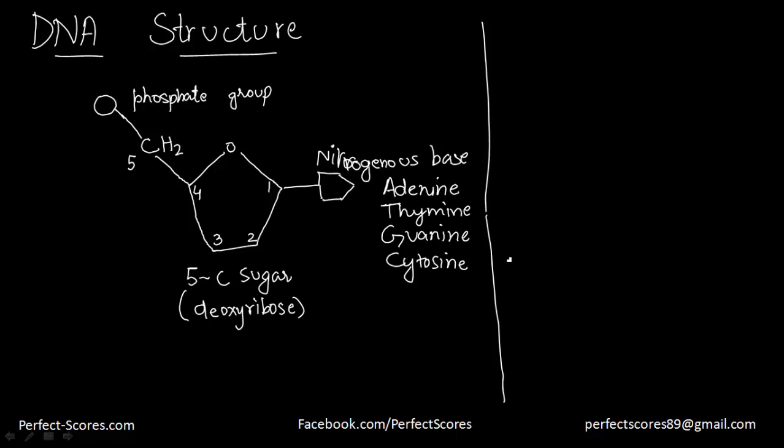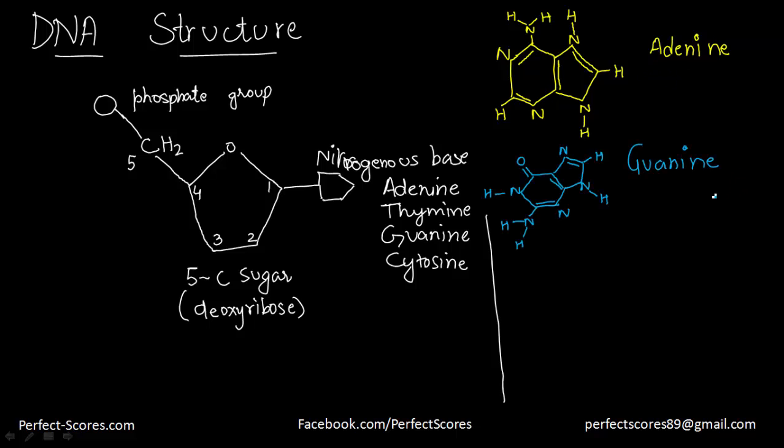Let me go ahead and draw the structure. This over here in the yellow color is a structure of adenine. The second base that you can see in blue color is guanine. As you can see, adenine and guanine, both of them are known as double ring bases. And another word that we use for both of them is purines. So adenine and guanine are purines, double ring bases.